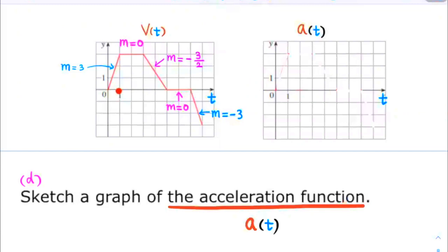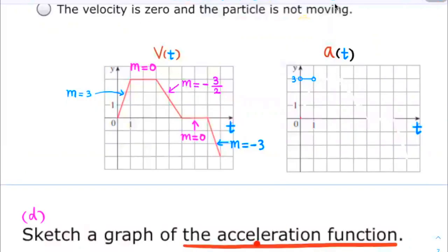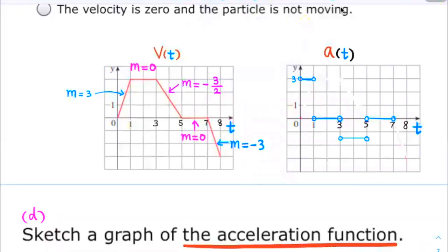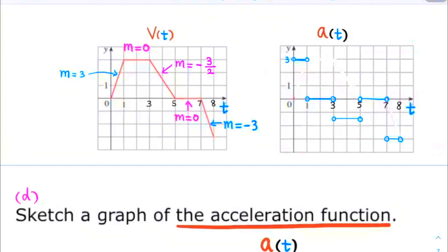So the graph of the acceleration function is as follows. Between 0 and 1, acceleration equals 3. When t is between 1 and 3, acceleration is 0. When t is between 3 and 5, acceleration equals negative 3 halves. When t is between 5 and 7, acceleration equals 0. When t is between 7 and 8, acceleration equals negative 3. This is the graph for the acceleration function.